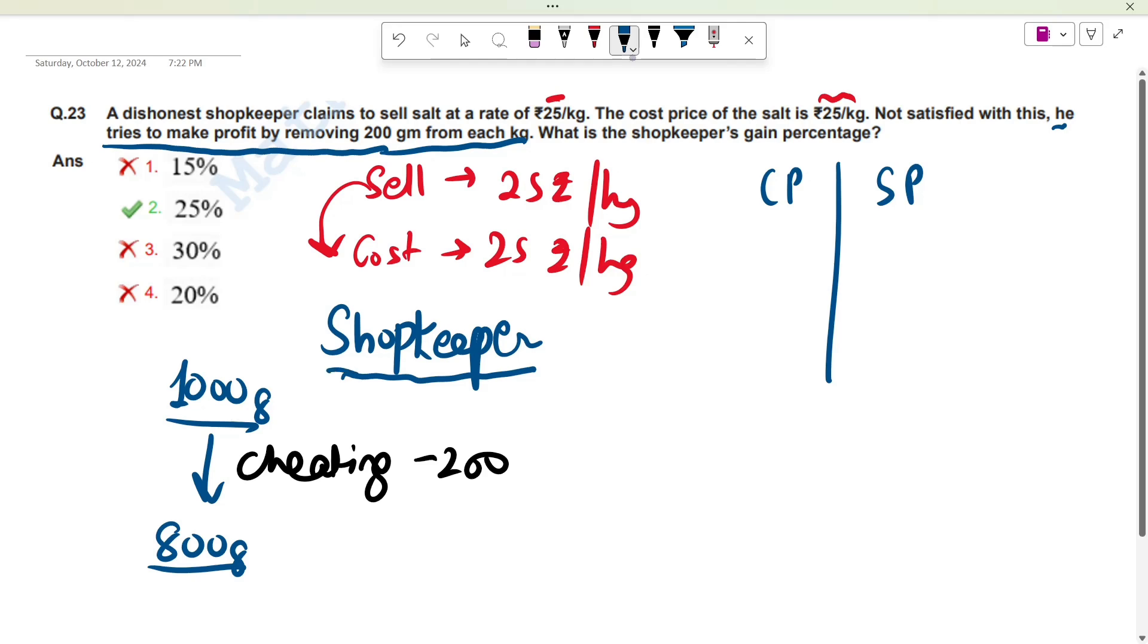What do you think if you're a shopkeeper? If you're a shopkeeper, then what are you doing? Cheating. And cheating happens when your profit and the selling price is greater than cost price.